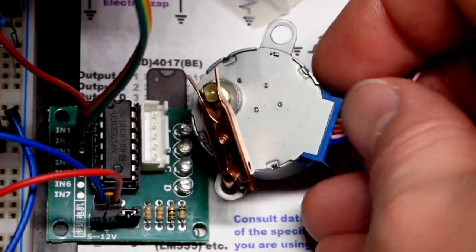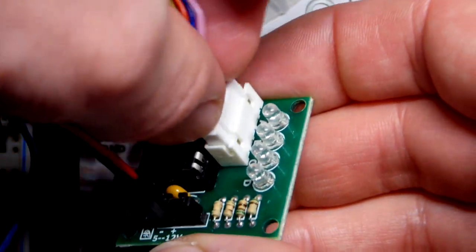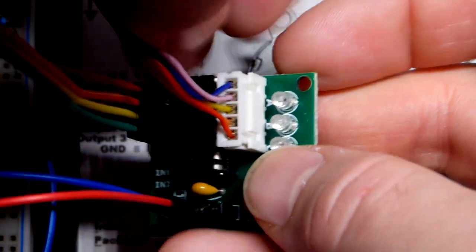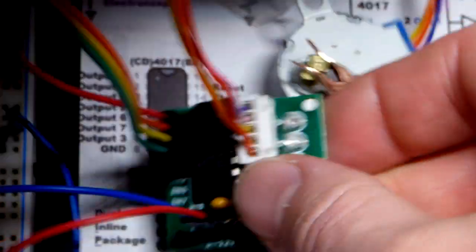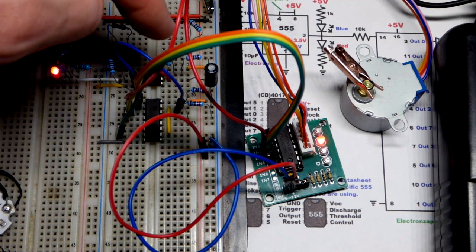And this stepper motor already has the ribbon cables in there. We just have to insert it in the slot there. So I bought these in a kit where they came together. So you know they'll work together perfectly. And now I turn the power on.